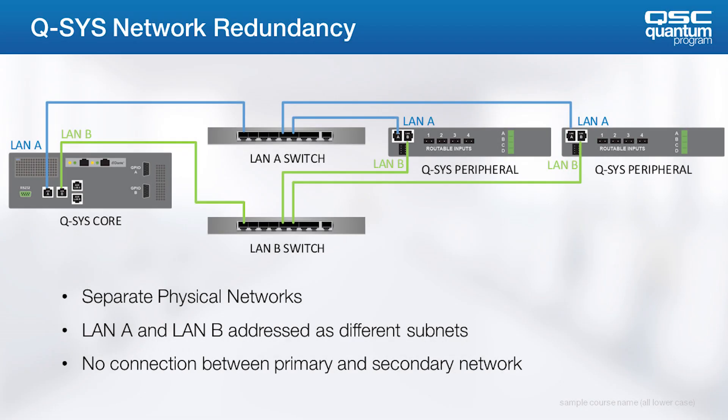Let's look first at a system using a single Q-SYS core and QLAN network redundancy. LAN A and LAN B are used for the respective primary and secondary networks. Note that the LAN B network is always hot, in the sense that QLAN is always flowing on both primary and secondary networks to minimize any perceived audio losses when the primary network fails.